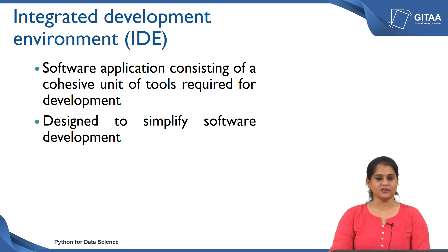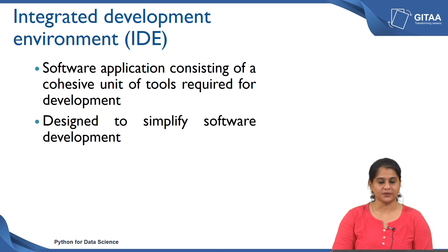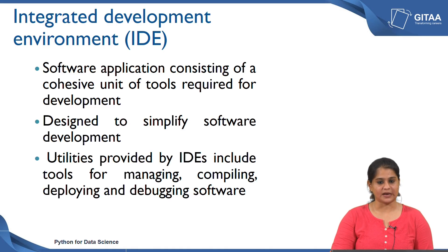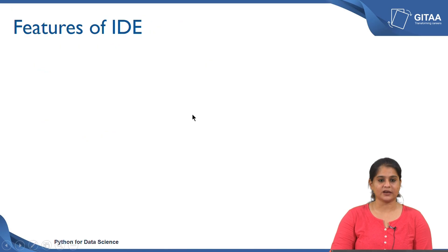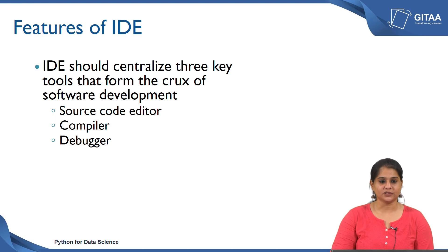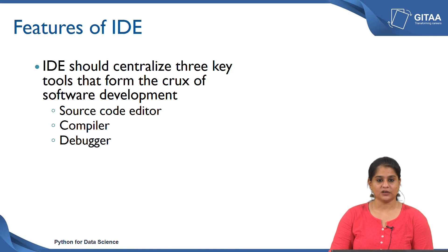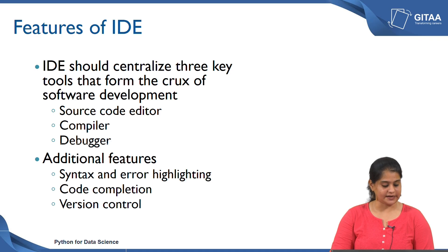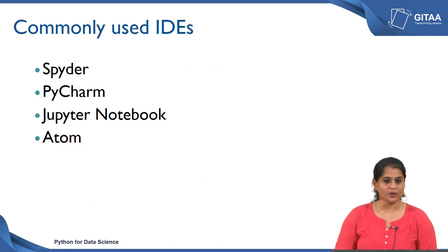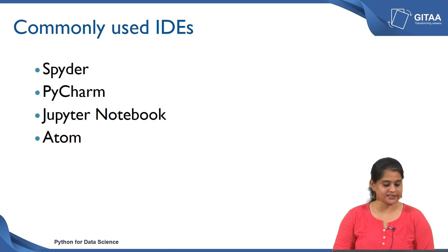As an end user who is not a developer, you might want all the tools available at a single click, so using an IDE will be very beneficial. The features provided by IDEs include tools for managing, compiling, deploying, and debugging software. Any IDE should consist of three important features: a source code or text editor, a compiler, and a debugger. IDEs can also have additional features like syntax and error highlighting, code completion, and version control. The most frequently used IDEs for Python are Spyder, PyCharm, Jupyter Notebook, and Atom.